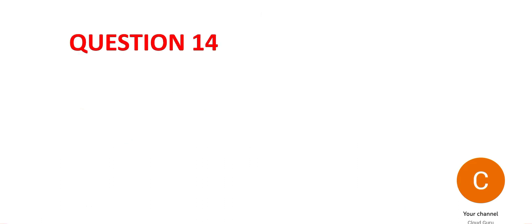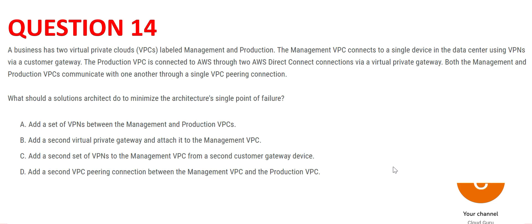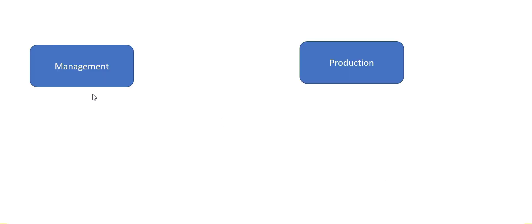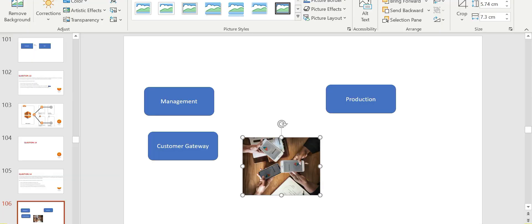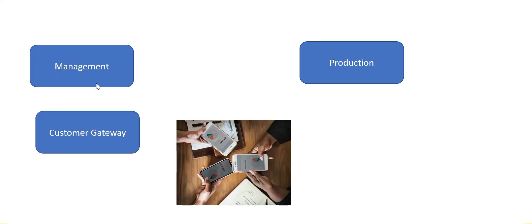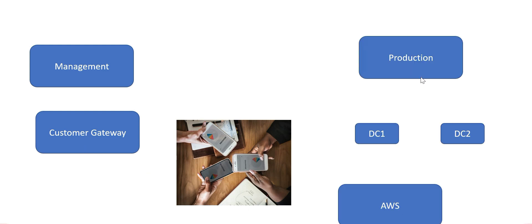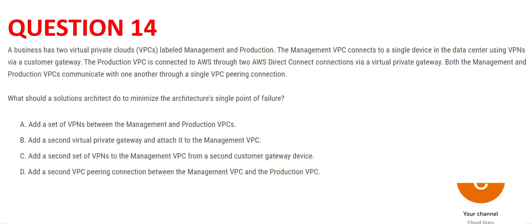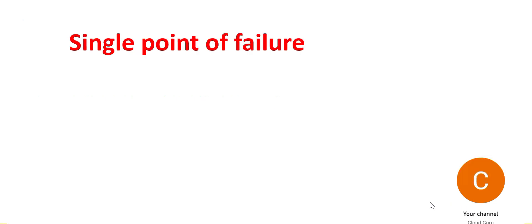Question 14 — please pause and read carefully. There are two VPCs: one is management and the other is production. The management VPC connects to an on-premises device through a customer gateway. The production VPC is connected to AWS through two Direct Connect connections. Management and production VPCs are connected through VPC peering. The question says you should avoid a single point of failure as much as possible.